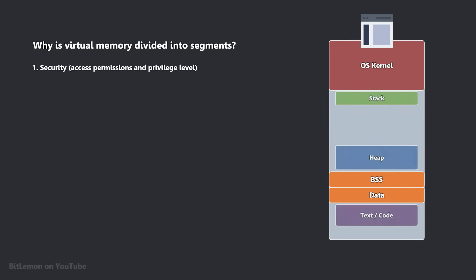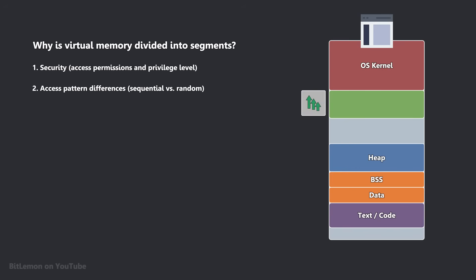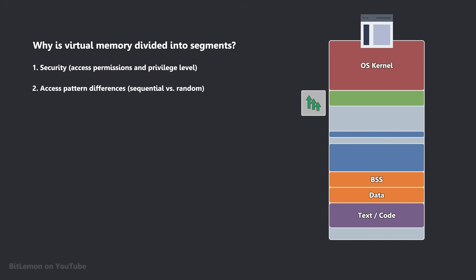The second reason is access pattern differences between regions. The stack grows and shrinks in a predictable sequential pattern, which makes memory allocation and release very fast. The heap, on the other hand, is optimized for dynamic and random memory allocation, often in changing amounts.